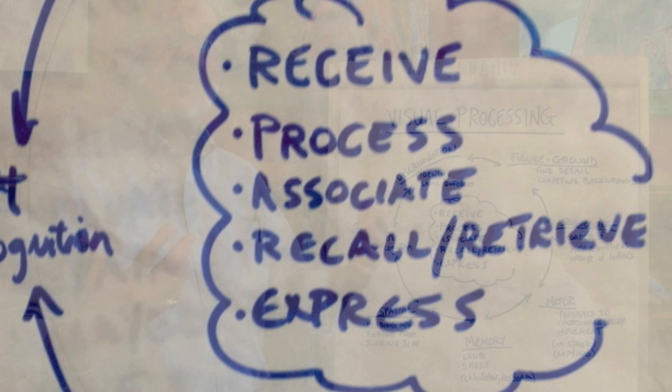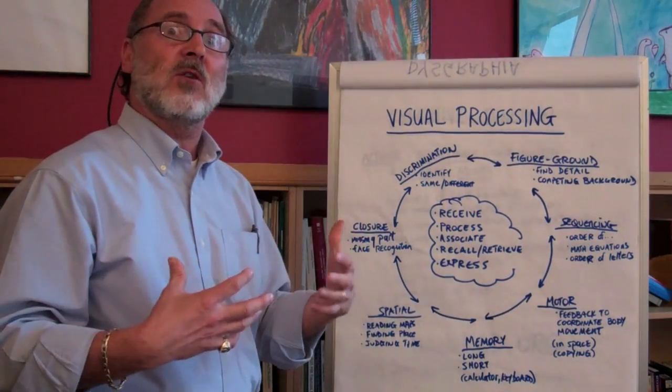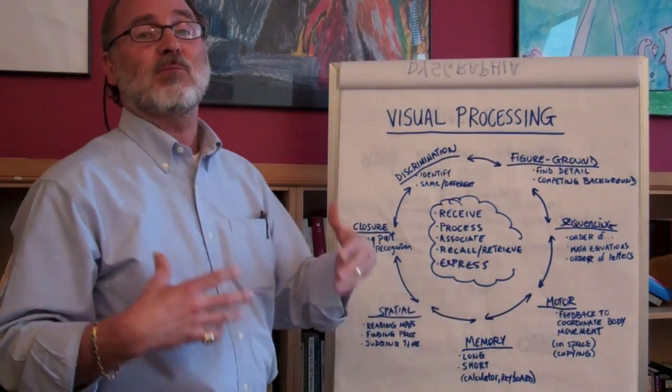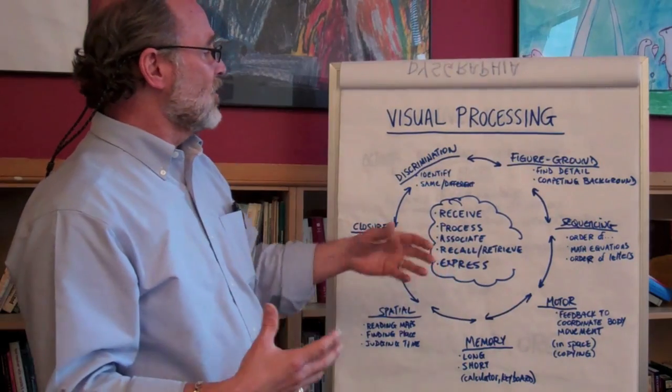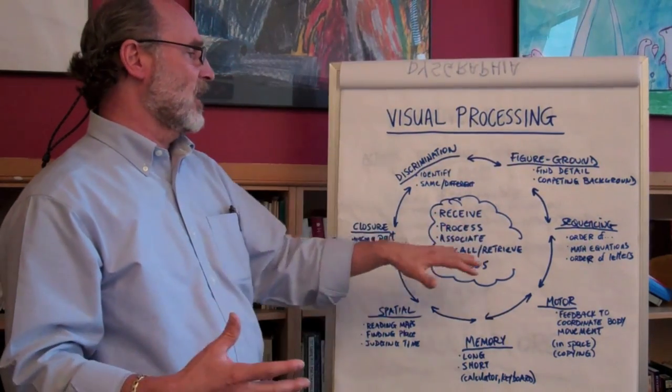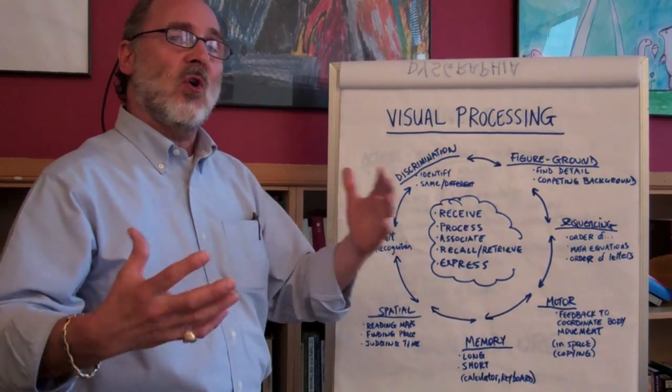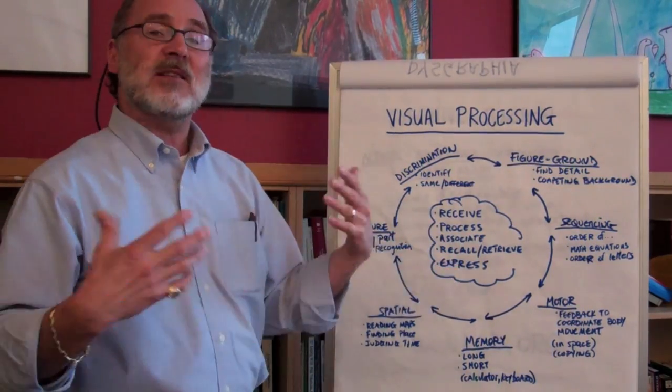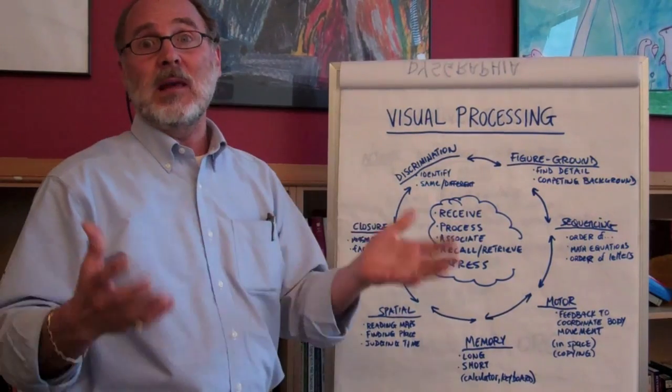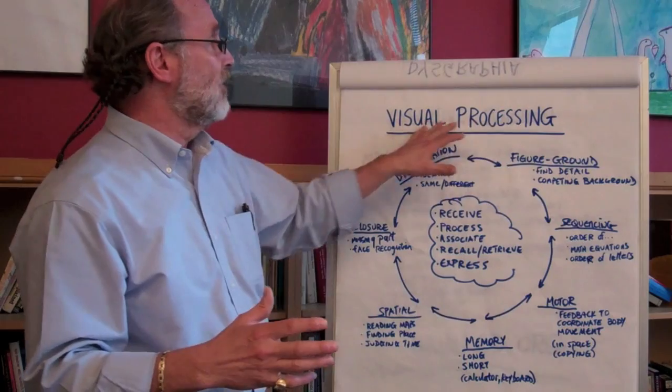To be able to do something with it and remember it, we have to associate it with some information that we have already learned or some new information that we're taking in. We recall that information. We retrieve it from our short and our long-term memory and then we express it in some way. So the process of receiving and processing, associating, recalling, retrieving, and then expressing that information is what we mean when we talk about visual processing.